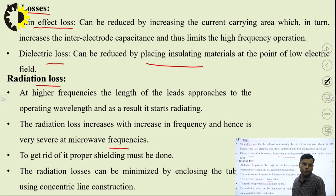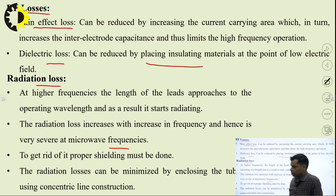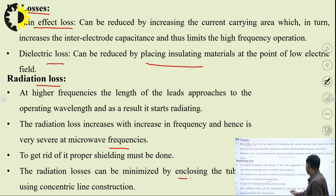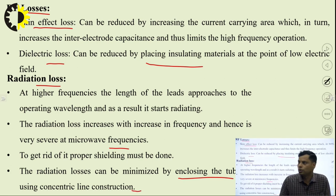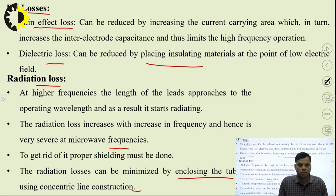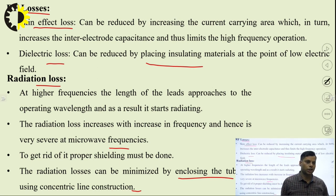At higher frequencies, the length of the lead approaches the operating wavelength and results in radiation — meaning the material starts radiating into free space. Radiation loss increases as frequency increases, and this is more specific to microwave frequencies. To prevent it, shielding is provided. Radiation losses can also be minimized by enclosing the tube or using coaxial line construction, and we also provide shielding there via transmission lines and coaxial cables.